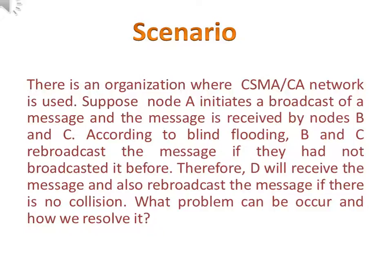There is an organization where CSMA/CA network is used. Suppose node A initiates a broadcast of a message and the message is received by nodes B and C. According to blind flooding, B and C rebroadcast the message if they had not broadcast it before. Therefore, D will receive the message and also rebroadcast the message if there is no collision. What problem can occur and how do we resolve it?